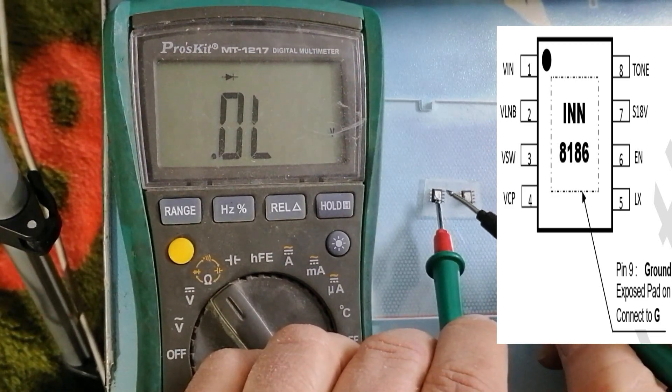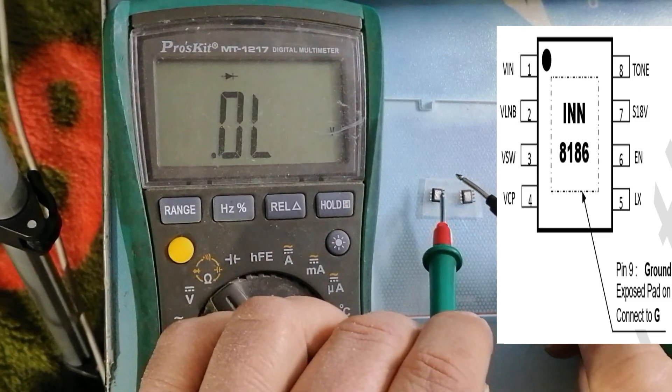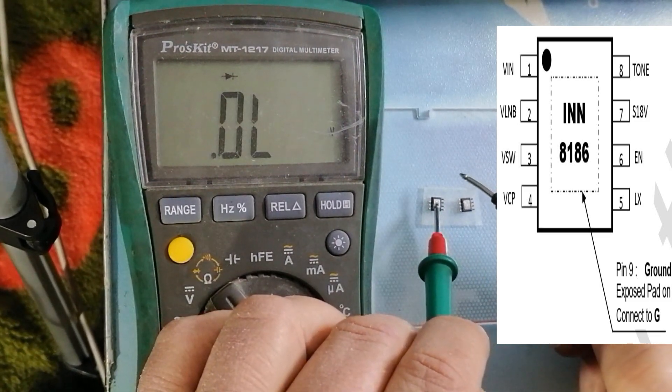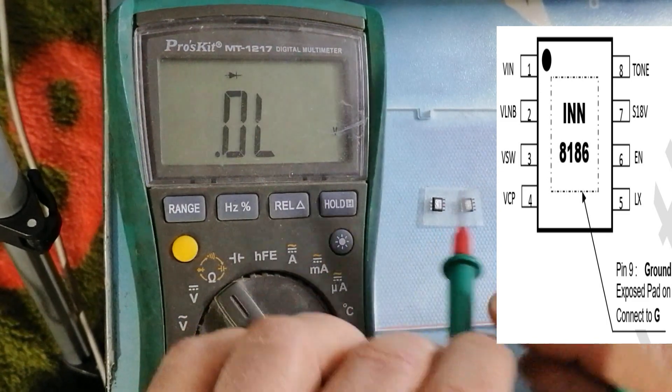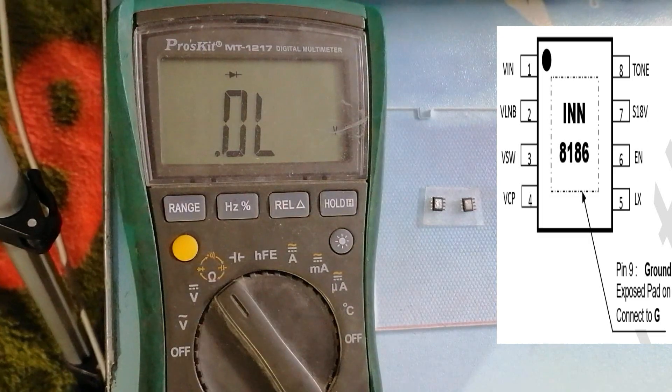These are two ways to test an IC using a multimeter. There is another way we can use a power supply. We'll discuss that in another video. Thank you for watching.